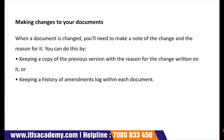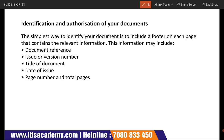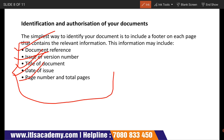Then comes the identification and authorization of your documents. How can you identify your documentation? The first is document reference. The second is issue or version number. The third is the title of the document. The fourth is date of issue. And the last is page number and total pages. These are all the things that come under the identification and authorization of documents.